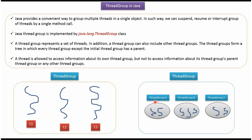Here you can see ThreadGroup A which contains 2 threads, ThreadGroup B which contains 3 threads, and ThreadGroup C which contains 2 threads. Like that, we can create multiple ThreadGroups.